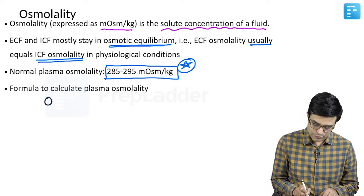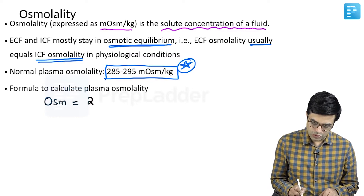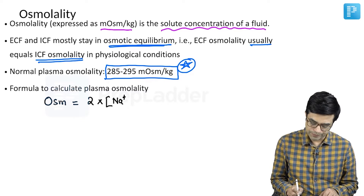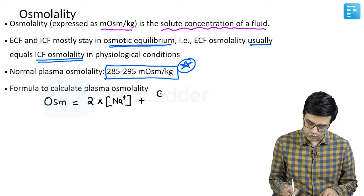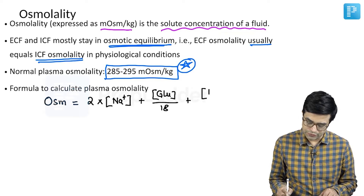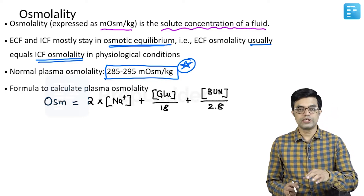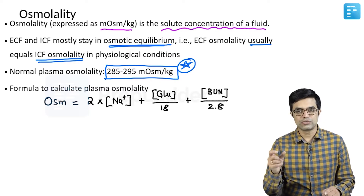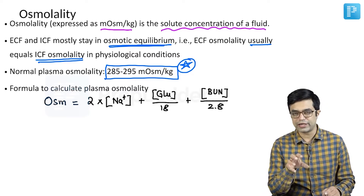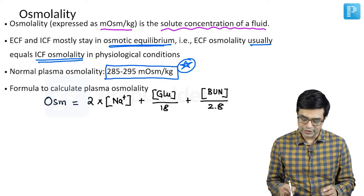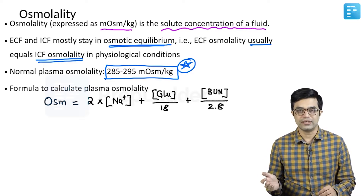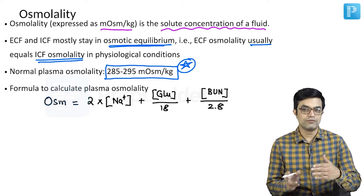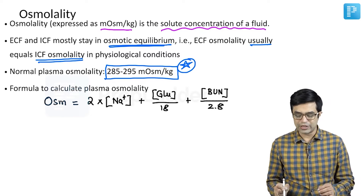The formula says: osmolality of plasma = 2 × [Na⁺] + [glucose]/18 + [BUN]/2.8. Why do we use 2 × sodium? Because sodium never stays alone — it is always associated with either chloride or bicarbonate, so we multiply sodium concentration by 2. Glucose and BUN are usually expressed in milligrams per deciliter, while sodium is in millimoles per litre; to convert, we divide glucose by 18 and divide BUN by 2.8.